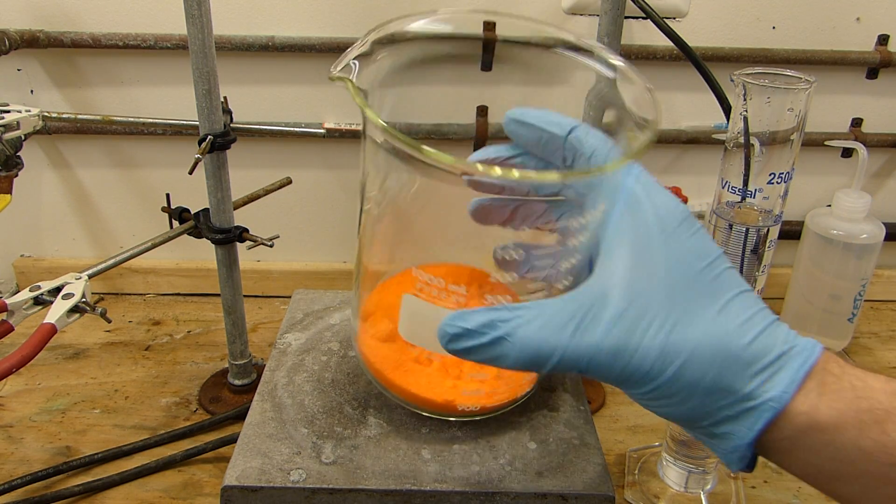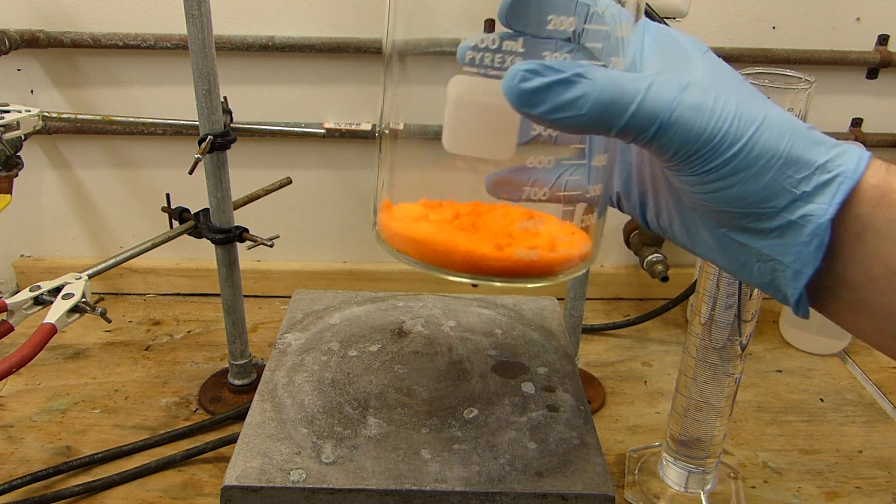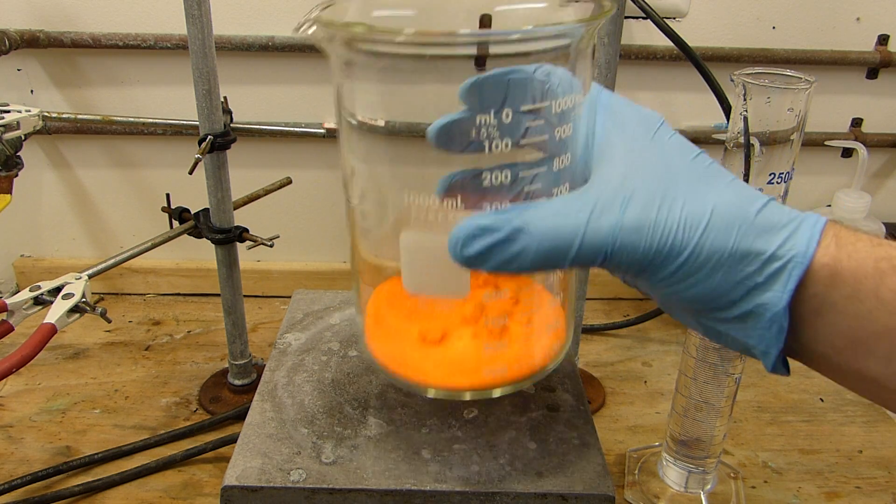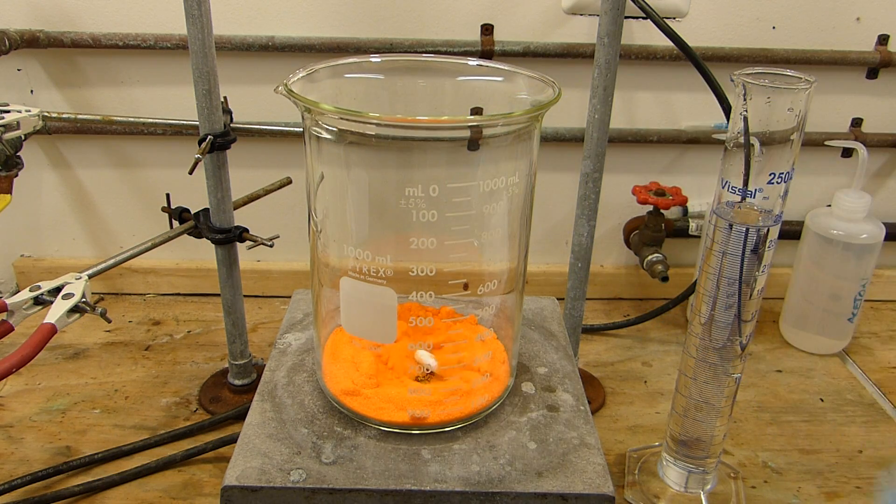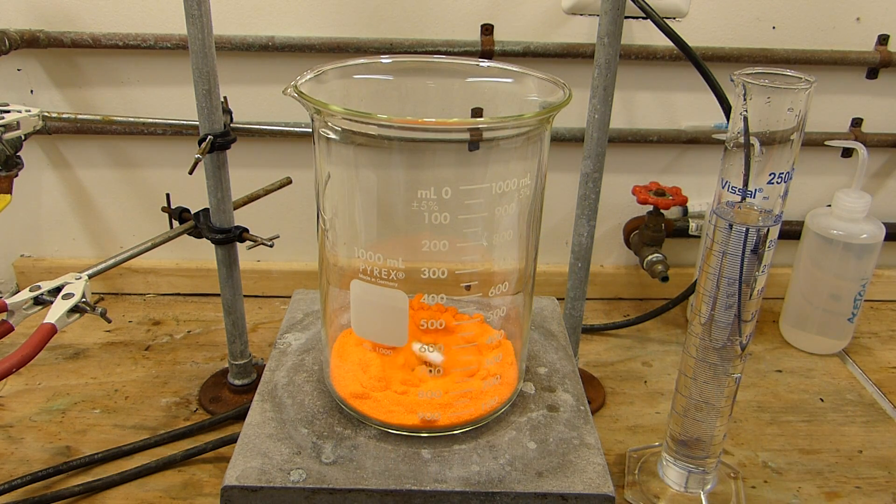I'm going to start with 100 grams of sodium dichromate dihydrate and I've added a stir bar to that. Get it on the plate and we'll start some stirring here. The stir plate's rather powerful, I kind of like that.